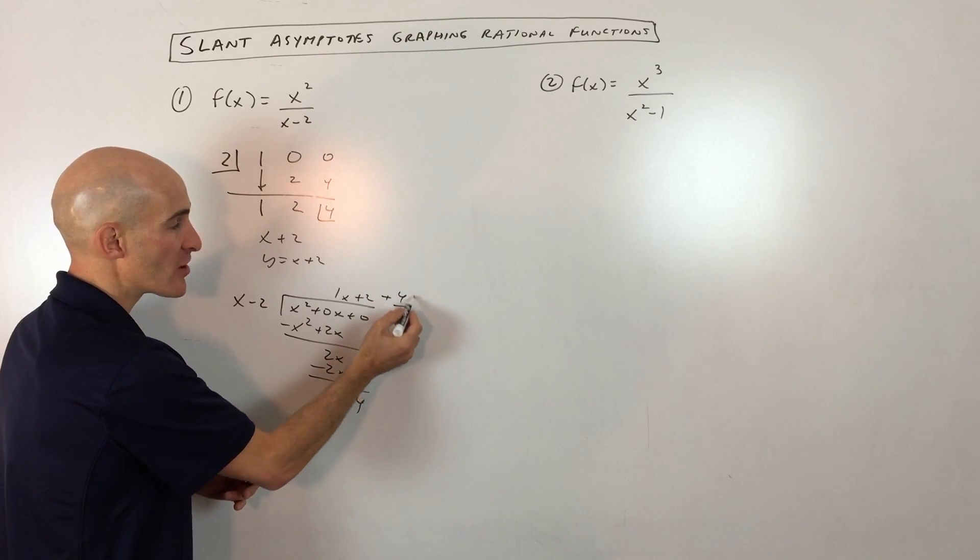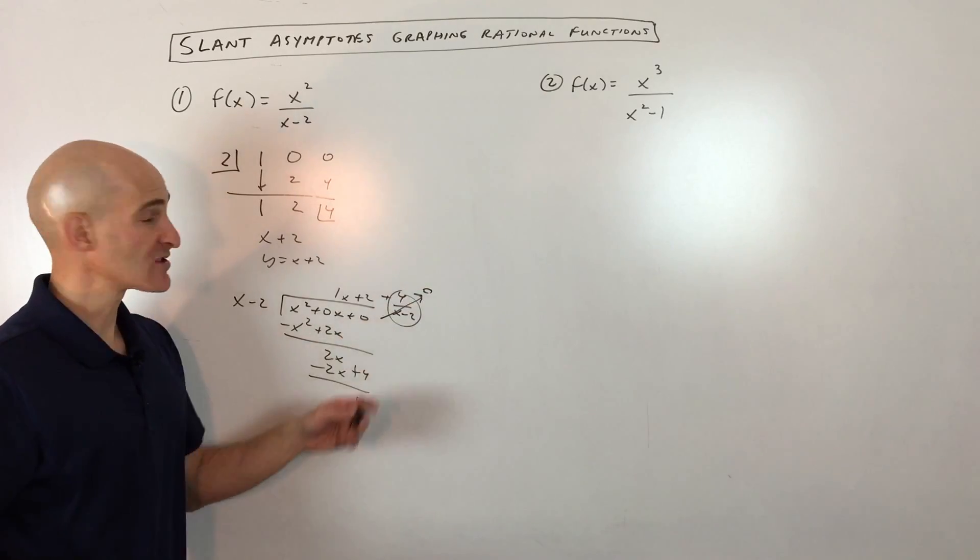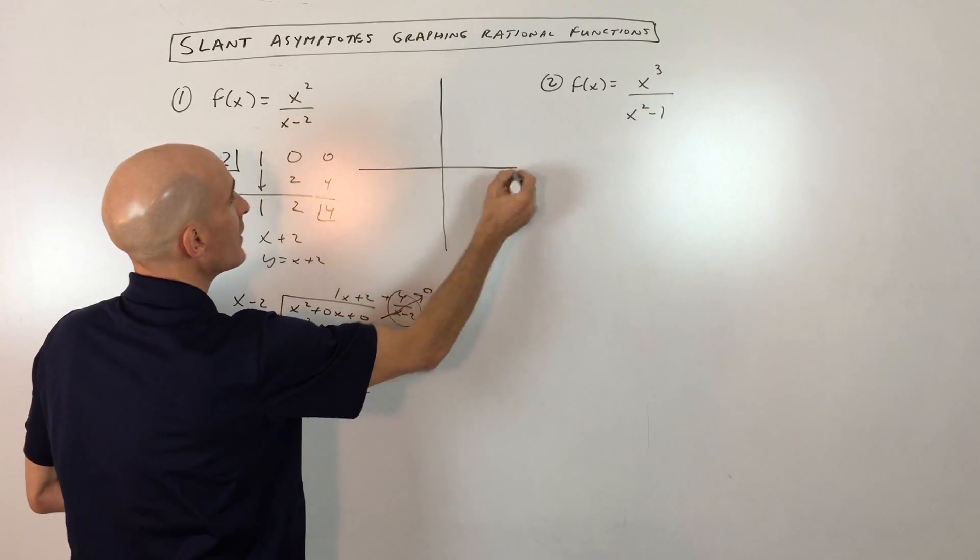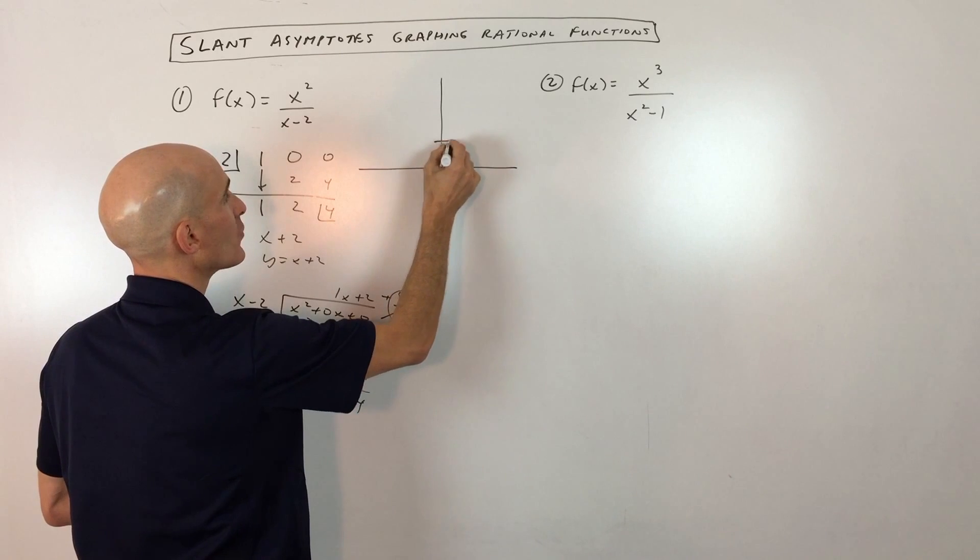The remainder we don't have to worry about. And the reason is because this is going to be 4 over x minus 2. As x gets larger and larger, this whole term is actually going to go to 0. So that's why we're not concerning ourselves with that. If we go and start graphing this, what we get is a graph that looks like this. We have a slant asymptote of y equals x plus 2.